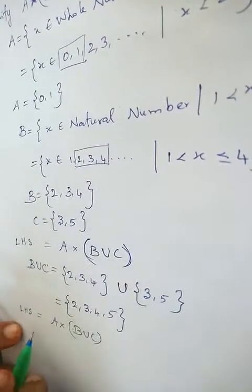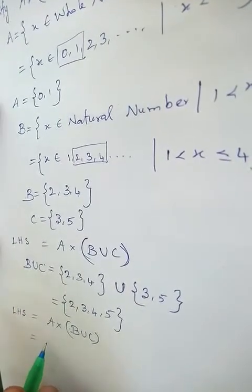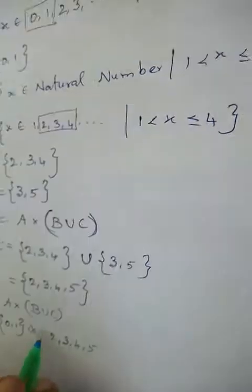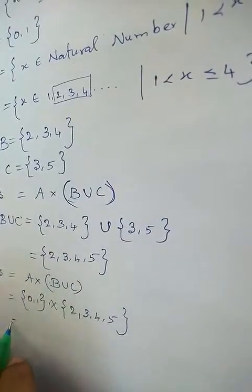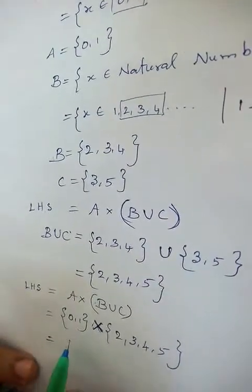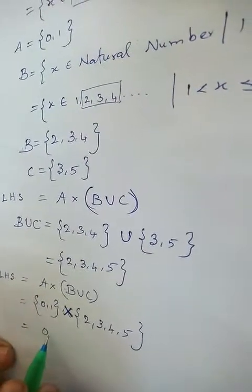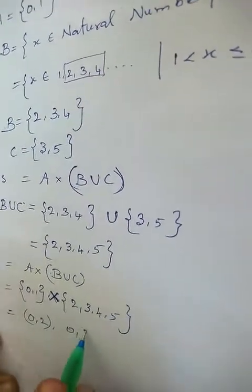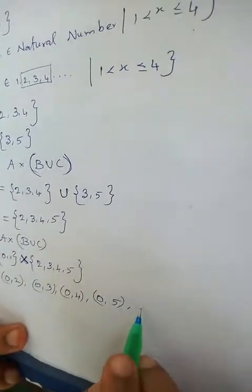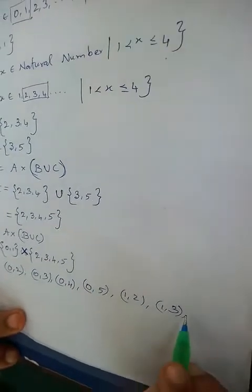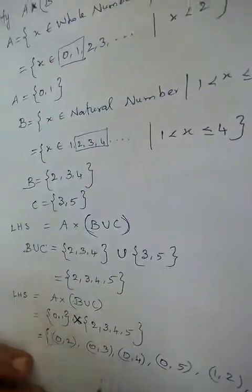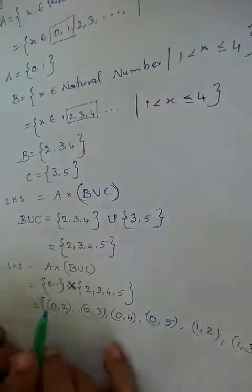Now we are going to find the left hand side value: A cross (B union C). When we are doing a Cartesian product, we have to write in ordered pairs. We write all the elements of A paired with all elements of B union C. This gives us the left hand side value.